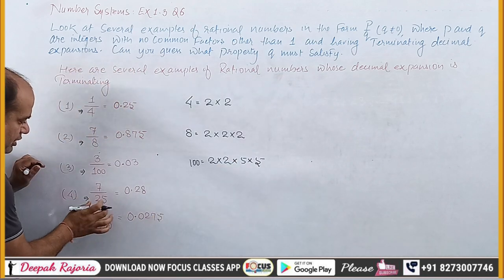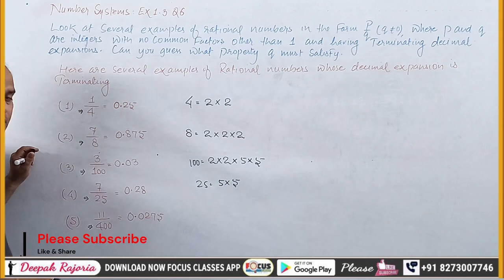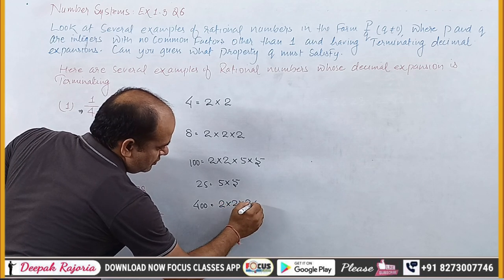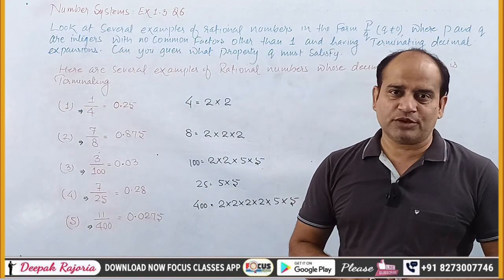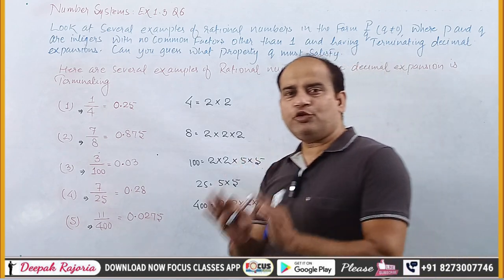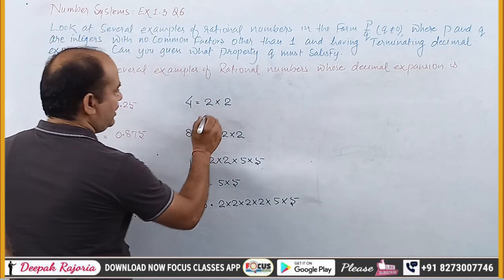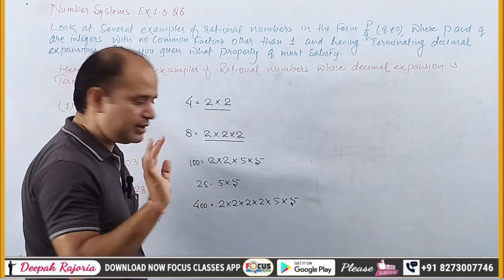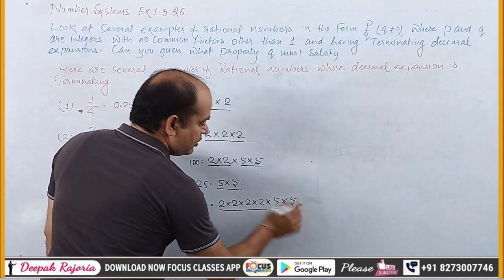कोई दिक्कत नहीं — यहाँ पर Q की जगह पर 25 है, और 25 का prime factorization होता है 5 × 5। यहाँ Q की जगह 400 है, और 400 को अगर हम लोग prime factorize करें तो 2 × 2 × 2 × 2 × 5 × 5 मिलता है — यह है 400 का prime factorization। तो यहाँ हम लोग observe करें — यहाँ 2 as a factor दिखाई देता है, और यहाँ 2 और 5 दोनों हैं, यहाँ भी 2 और 5 दोनों दिखाई देते हैं।